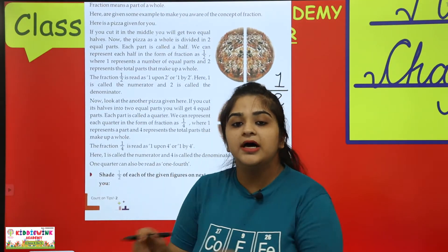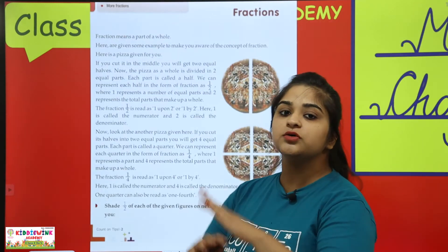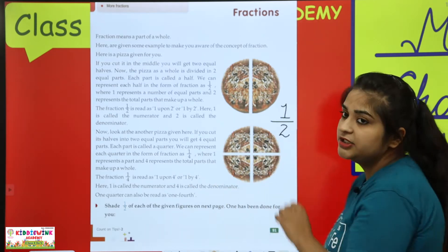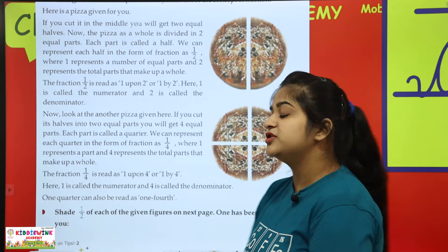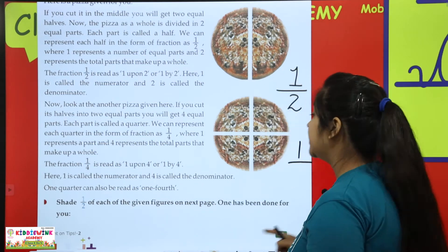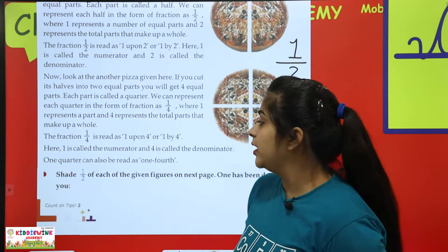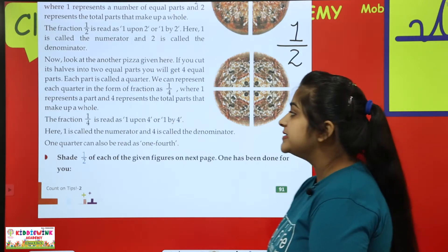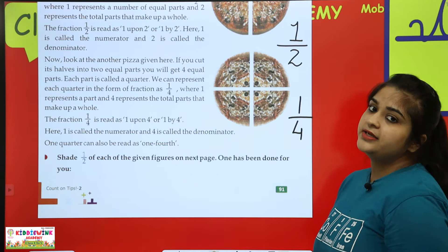We denote it from one by two. So if we have to do half of any part, we divide it from the parts — the total of each part goes down, and how many parts we are referring to goes up. How many pizza were there? One. How many parts did it divide into? Two. So we put two at the bottom. Now if we divide into four parts, the fraction is one upon four. We can read it as one upon four, or one by four — you can say it in two ways.